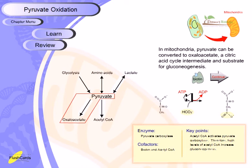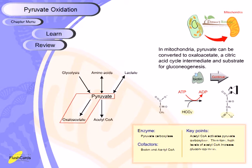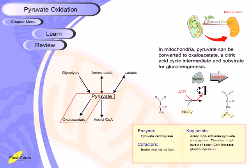Pyruvate carboxylase depends on two cofactors: biotin and acetyl-CoA. Acetyl-CoA activates pyruvate carboxylase; therefore high levels of acetyl-CoA increase gluconeogenesis. High levels of acetyl-CoA help convert pyruvate into oxaloacetate, and since oxaloacetate is a key intermediate of gluconeogenesis, the cell can shift back toward gluconeogenesis. All of these metabolic processes are linked with each other.